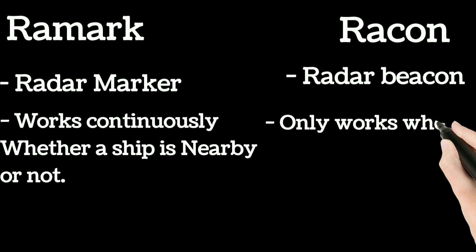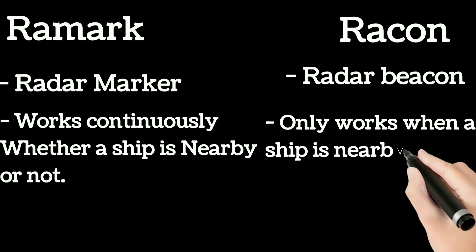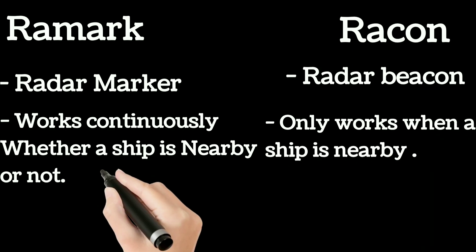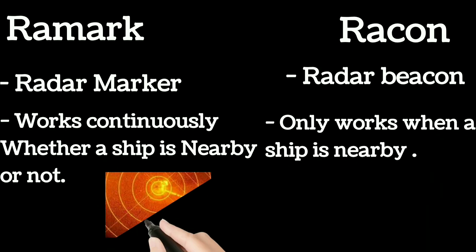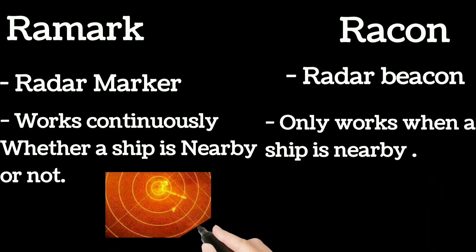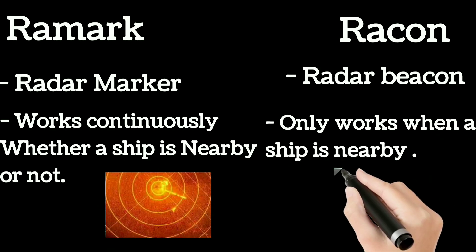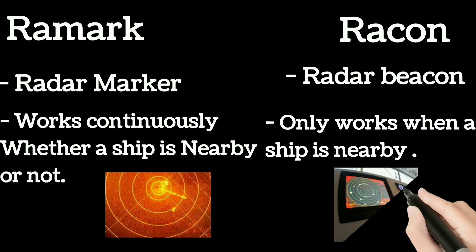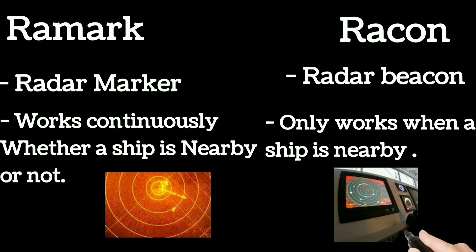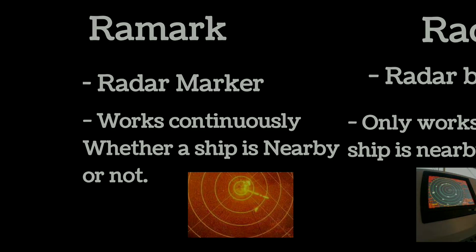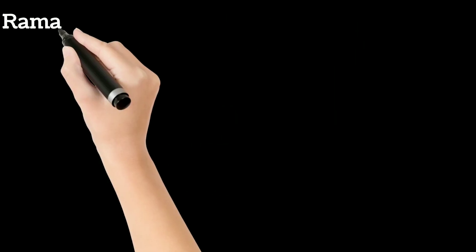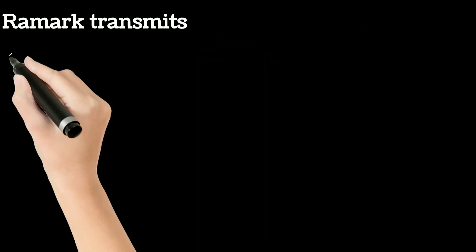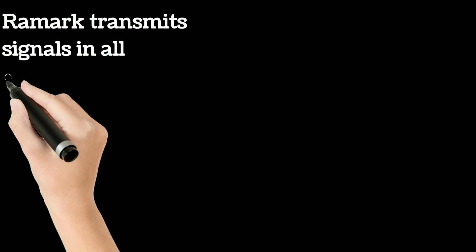RAMARC works continuously whether a ship is nearby or not, whereas RACON only works when a ship is nearby. RAMARC transmits signals in all directions whereas RACON doesn't transmit any signal.